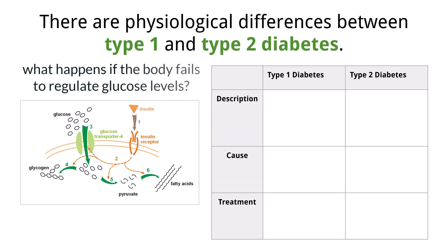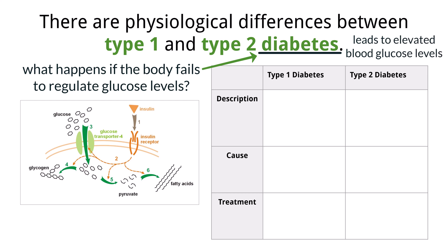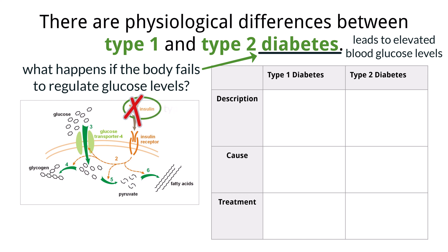When the body fails to properly regulate blood glucose levels, the result can be diabetes — a disease in which the body fails to regulate blood glucose effectively, leading to chronically elevated blood glucose levels. In a healthy body, when blood glucose levels rise, insulin binds to insulin receptors on body cells, triggering glucose uptake through GLUT4. However, in people with diabetes, either insulin production is impaired, as in type 1, or the body's cells become resistant to insulin's effects, as in type 2, leading to poor glucose regulation.